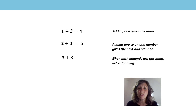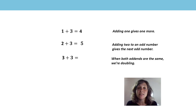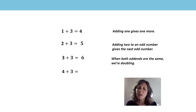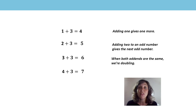3 plus 3 — these are doubles. When both addends are the same we're doubling, and double 3 is 6. I've got 4 plus 3. Well, 4 plus 3 is very close to 3 plus 3 — it's called a near double. So it's going to be 1 more than 6. That's 7.